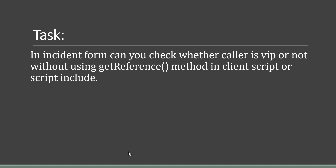So today we'll see what to do if we are not using the getReference method in a client script or writing any script include — what other ways are available. In that case, we can write a display business rule. A display business rule runs when a request is made to the server to display a server-side record in the form. We'll write one display business rule, store the caller's VIP value in a scratchpad variable, and then use that scratchpad variable in the client script to check whether the caller is VIP or not.